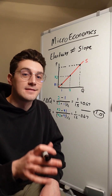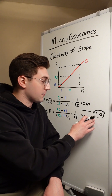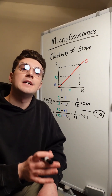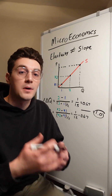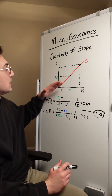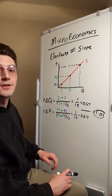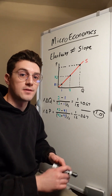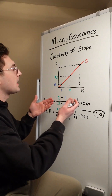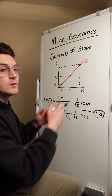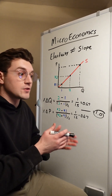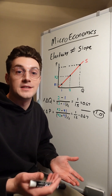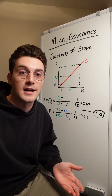The reason we're getting the same price elasticity of supply value is because of the direct, or positive, relationship of the supply curve. As price increases, quantity also increases with it. So it doesn't really matter what points we're moving between — the slope of the supply curve is what determines our price elasticity of supply.